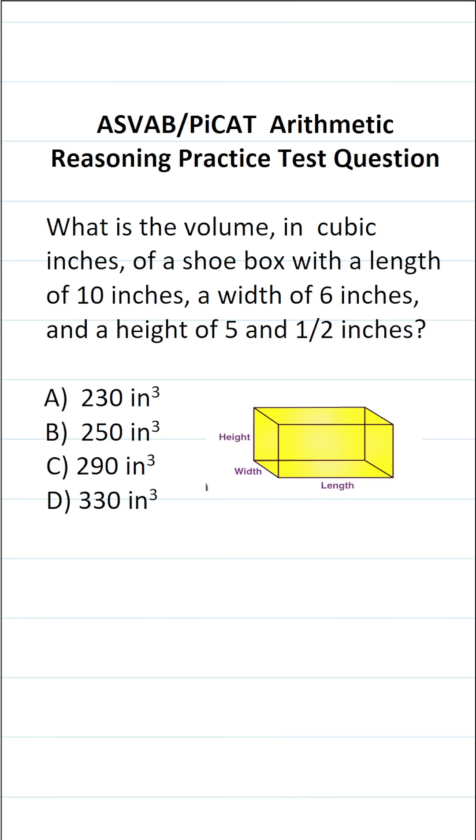On the ASVAB and PICAT, you're not permitted to use a calculator or reference sheet. So in addition to being able to do these calculations by hand, you also have to have these basic formulas memorized. We're talking about a shoebox, which is in the shape of a rectangular prism. You find the volume of a rectangular prism by doing length times width times height.